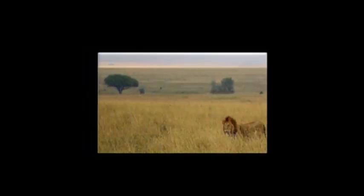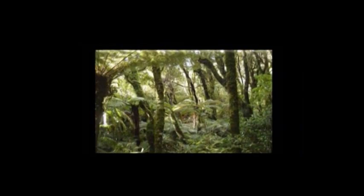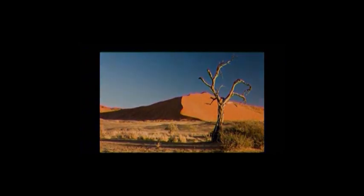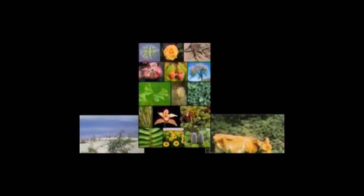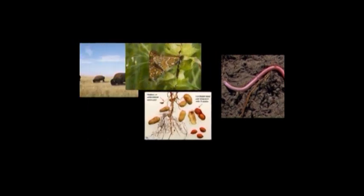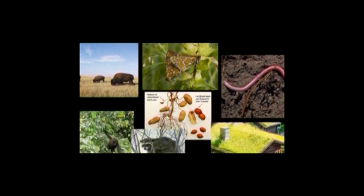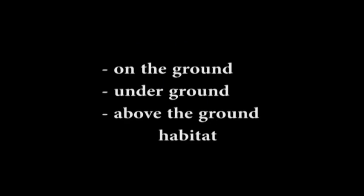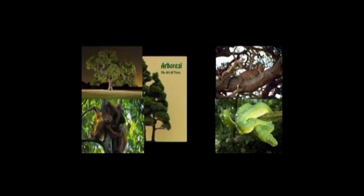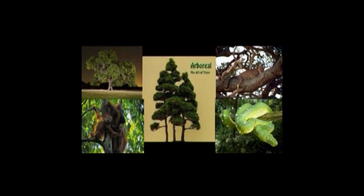Savannah — lions live here. Grassland. This is a rainforest. This is a desert. In these terrestrial habitats, it is possible that you find some plants or animals on the ground, under the ground, or above the ground, e.g., on trees or rooftops. This means that terrestrial habitats can be subdivided into ground, underground, and above the ground habitats. Those habitats above the ground, e.g., habitats on trees, are referred to as arboreal.